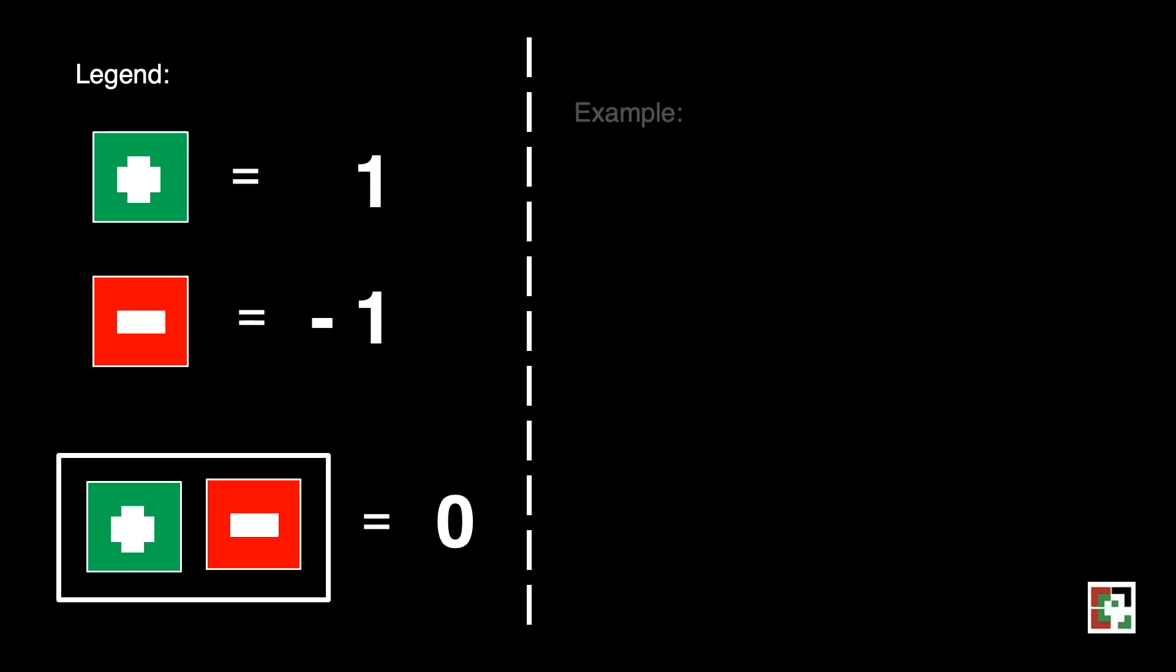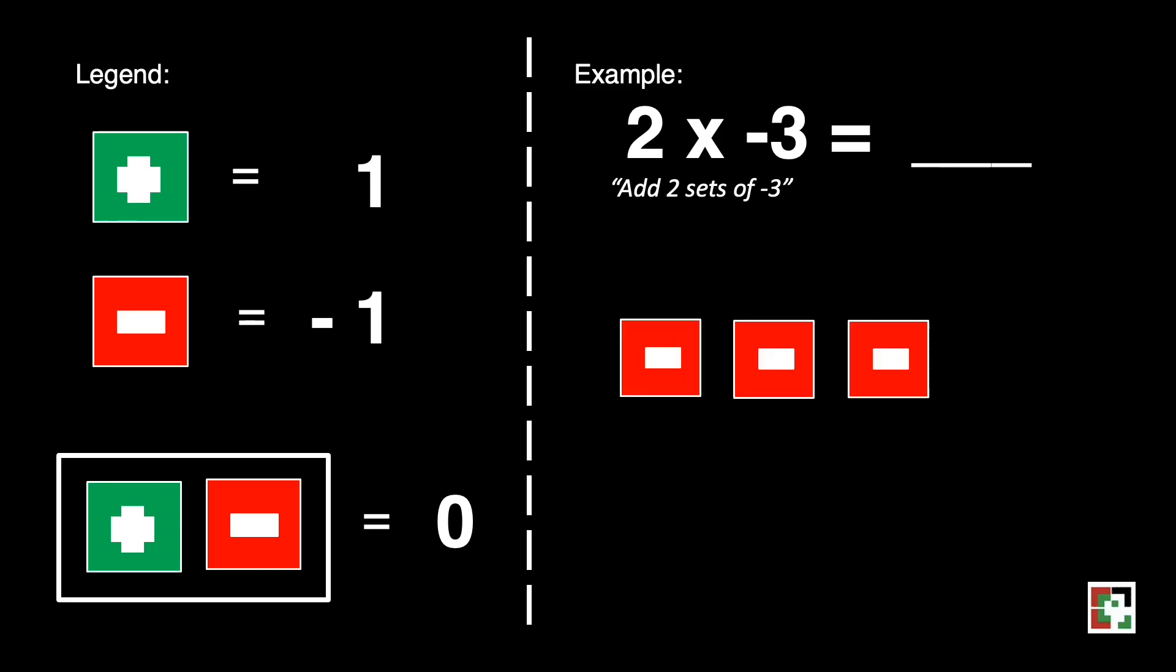Let's have another one. That's two times negative three. It means add two sets of negative three. It is represented by three red squares in a set. We'll be having one set and another set.